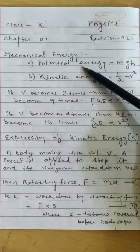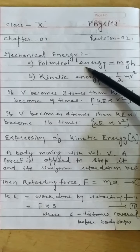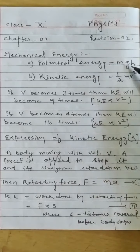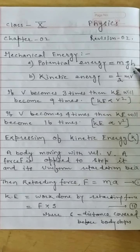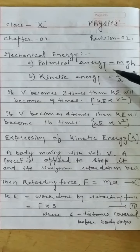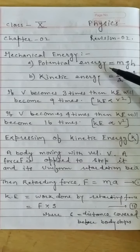Potential energy of a body is due to change in size, shape, and structure of the body. Potential energy is equal to MGH, where M is mass, G is acceleration due to gravity, and H is height above the surface of the earth. Some examples of potential energy are a raised hammer, key of a toy or watch, and a stretched or compressed spring.